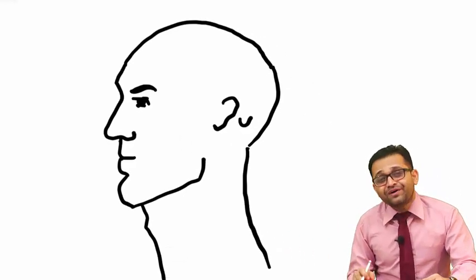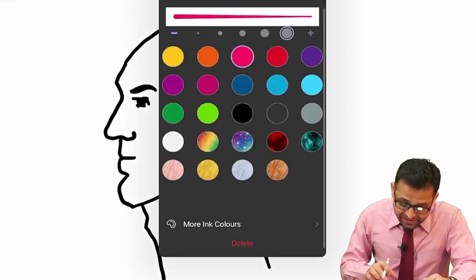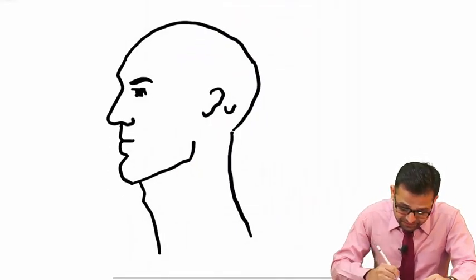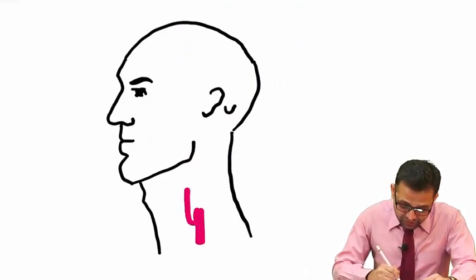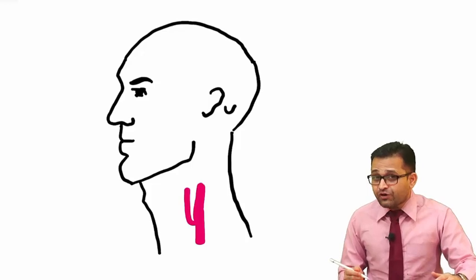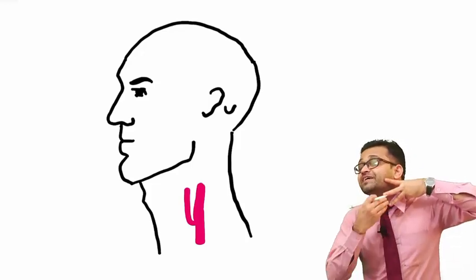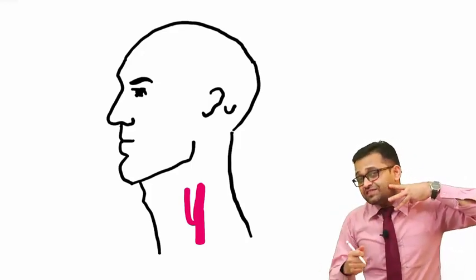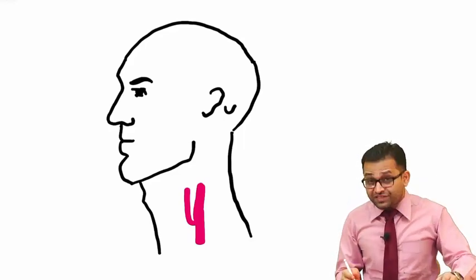We all are aware that the main arterial supply of the head-neck-face is by the common carotid artery. It is dividing into the external carotid artery and the internal carotid artery. We all know there are eight branches of the external carotid artery, in which three are anterior: first is ascending pharyngeal artery, next is superior thyroid artery, and another one is facial artery.